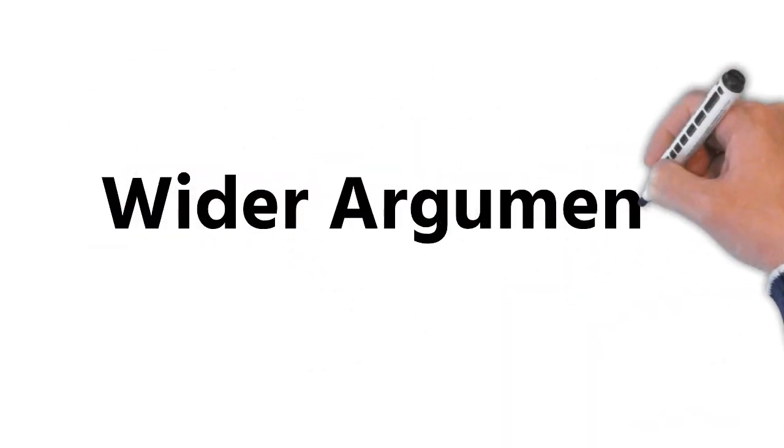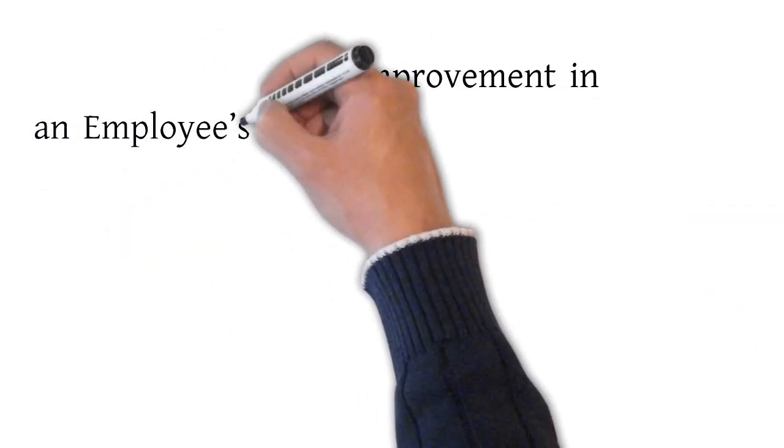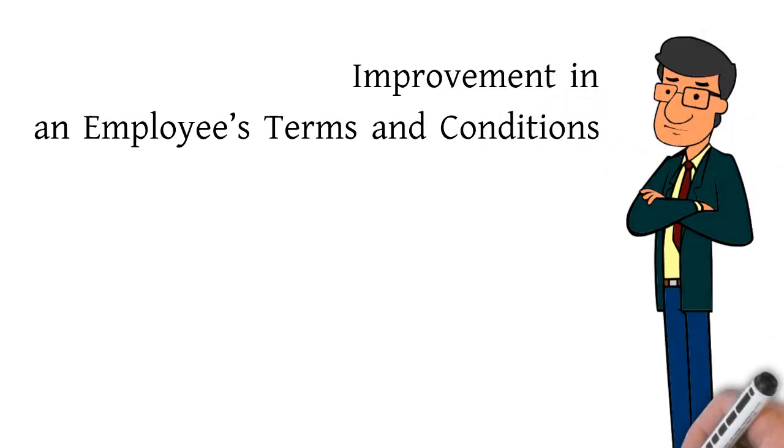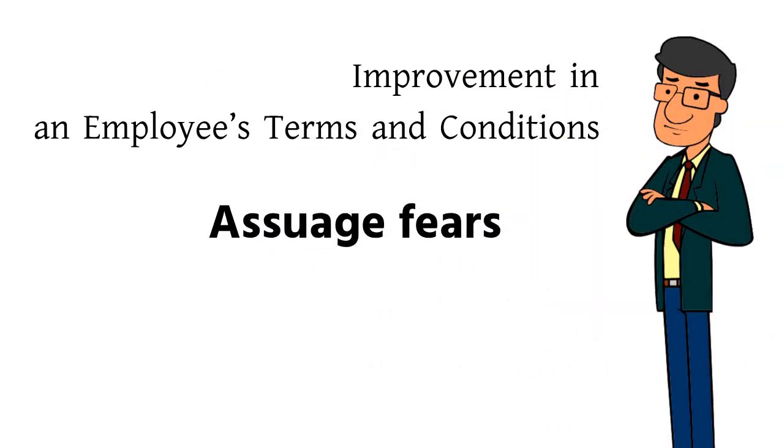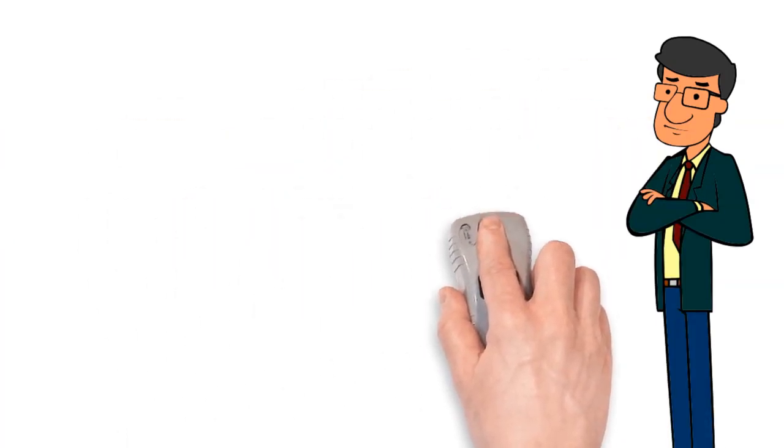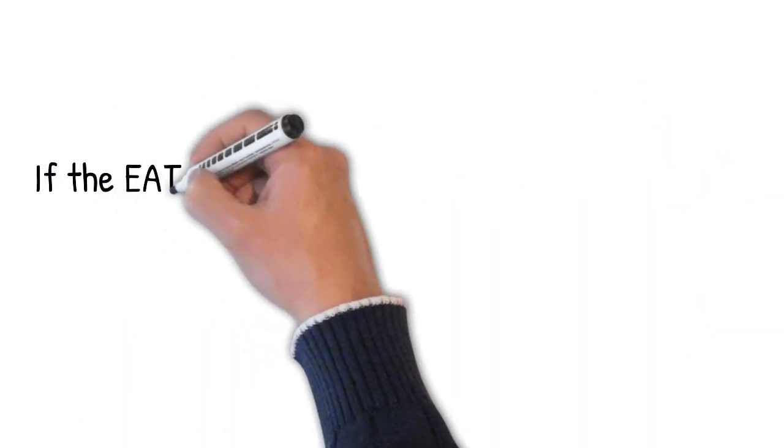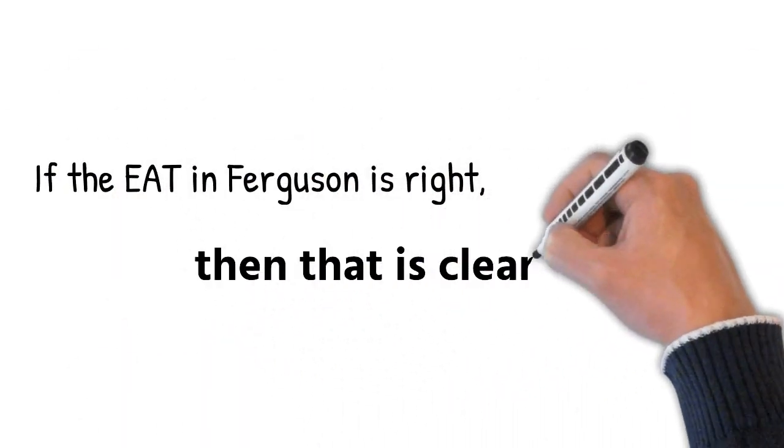But there is a wider argument here. Suppose, for example, the new employer were to agree an improvement in an employee's terms and conditions in order to assuage their fears about the effect of a transfer. Could they really then renege on the deal and argue that agreed variation was void? Well, if the EAT in Ferguson is right, then that's clearly a danger.